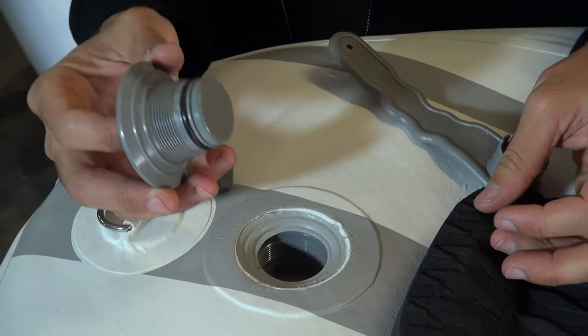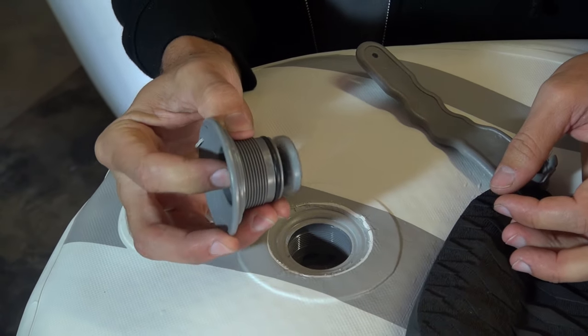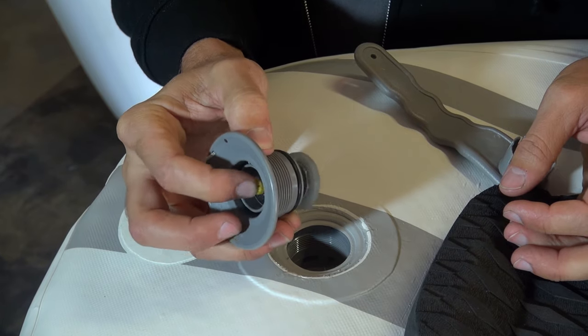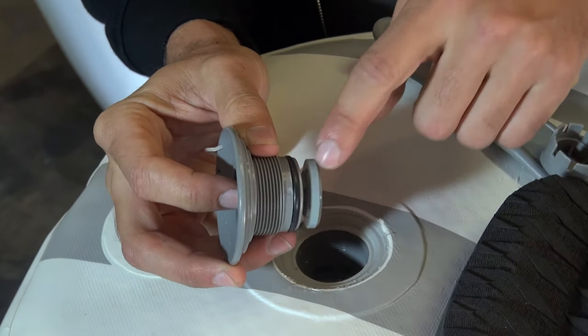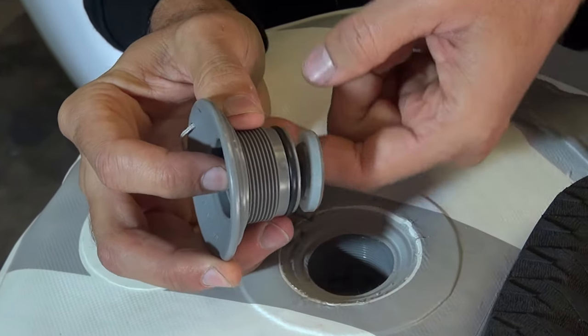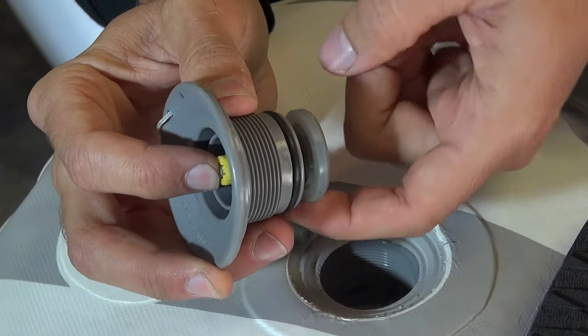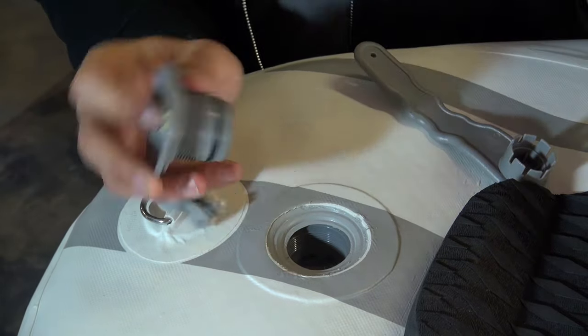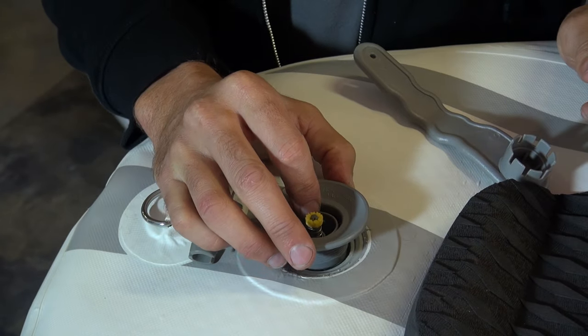A couple things you want to inspect right away is you want to inspect this spring. See if this is still operational. You want to see if there's any debris in here or anything preventing that from sealing tightly. It's possible there's just something right there. You just remove that, put it back there and screw it in.